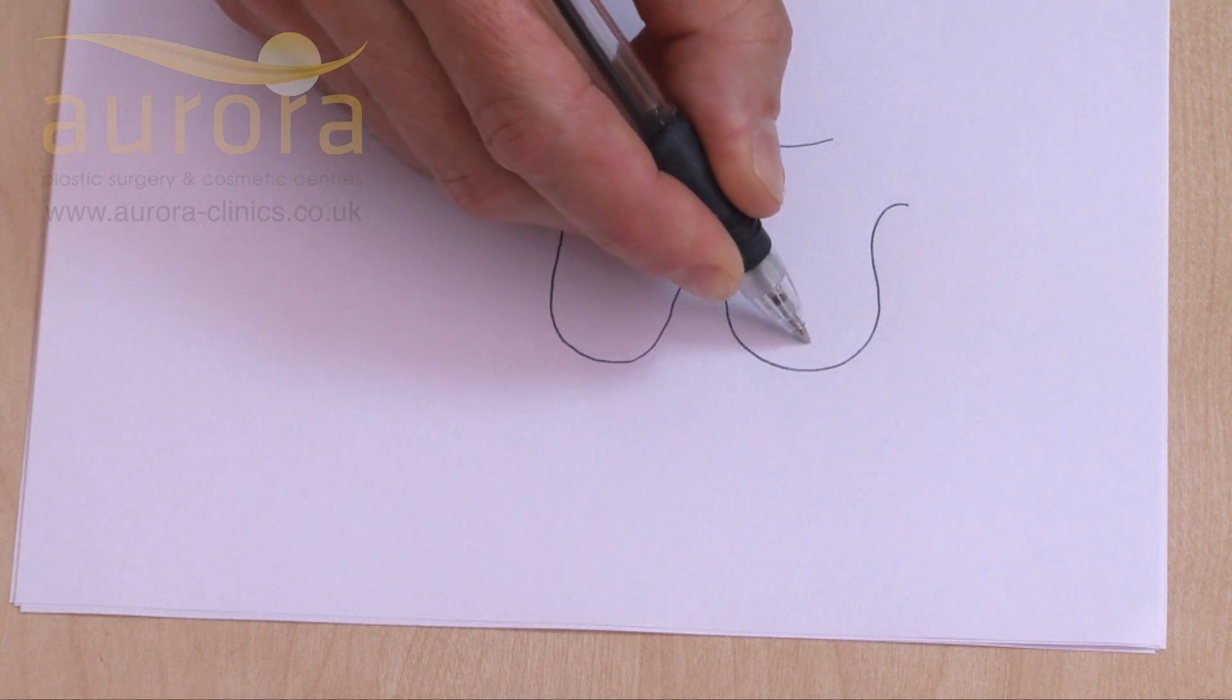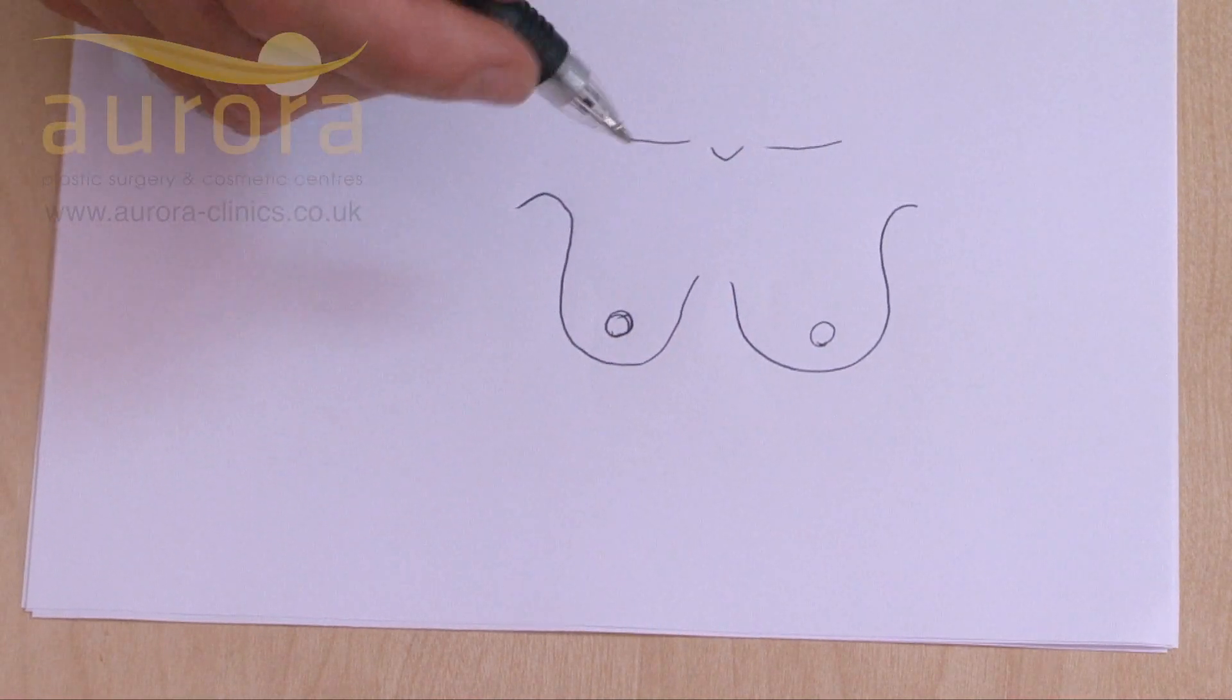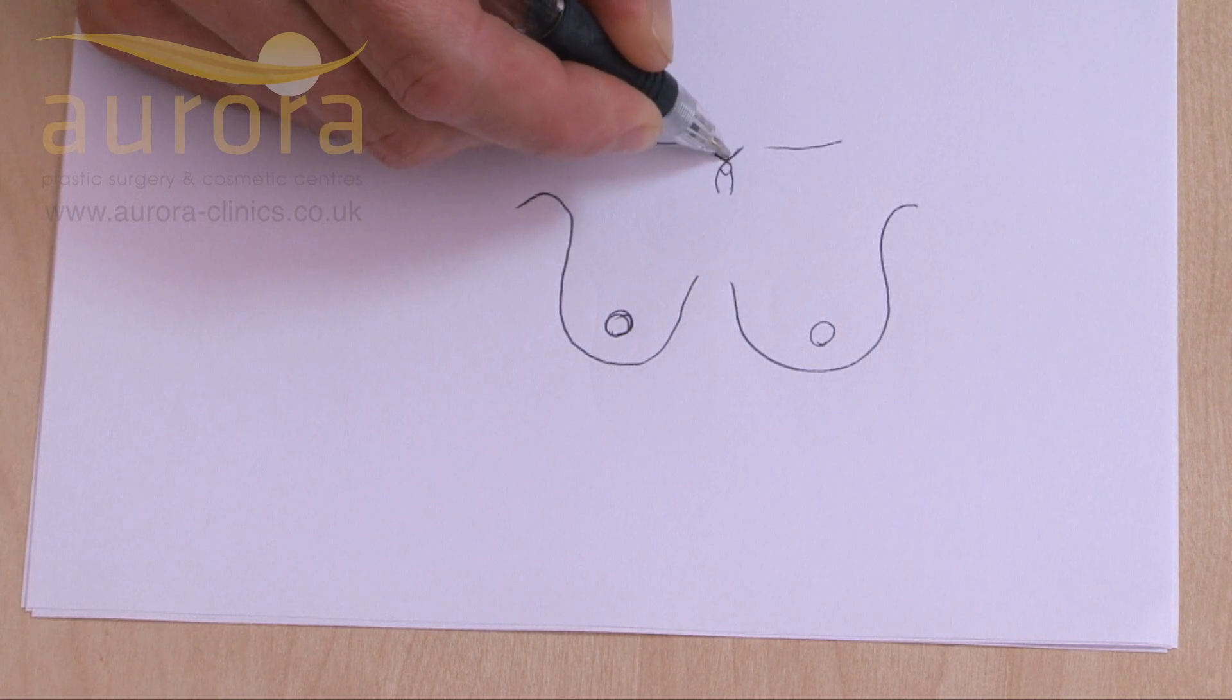These are the clavicles and the nipples are in these positions. So in a normal situation, the distance from here—you put your finger here, that's a finger—you'll feel your notch, the notch between your clavicles there.